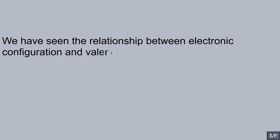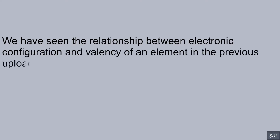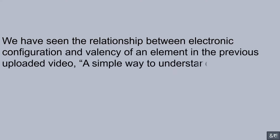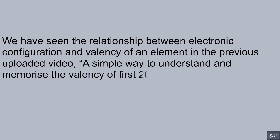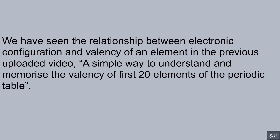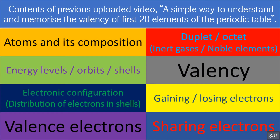We have seen the relationship between electronic configuration and valency of an element in the previous uploaded video — a simple way to understand and memorize the valency of first 20 elements of the periodic table. This video is a continuation of it.